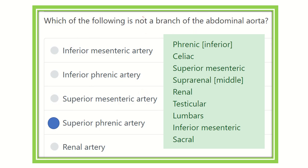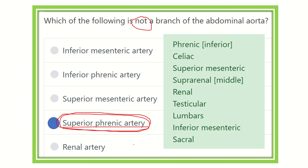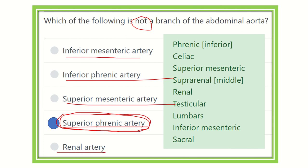So which is not a branch of the abdominal aorta? It is the superior phrenic artery, because the superior phrenic artery lies in the thorax and is derived from the descending thoracic aorta, not the abdominal aorta. The other options — inferior phrenic artery, inferior mesenteric artery, superior mesenteric artery, and renal artery — are all branches of the abdominal aorta. The branches include: phrenic, celiac, superior mesenteric, suprarenal, renal, testicular, lumbar, inferior mesenteric, and median sacral. Thank you.